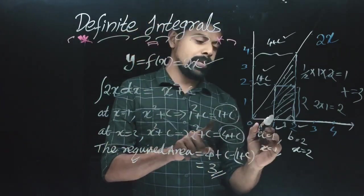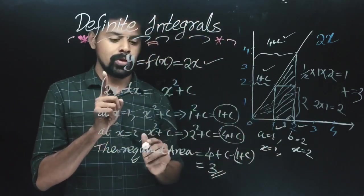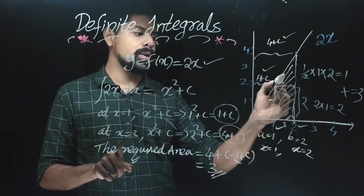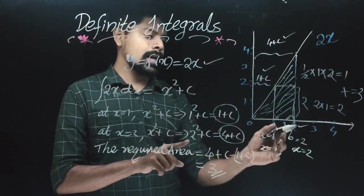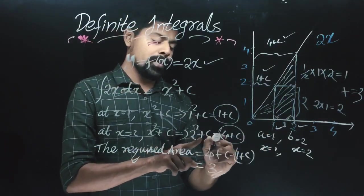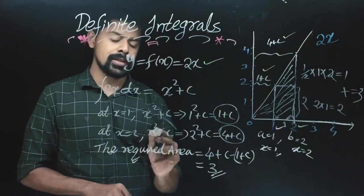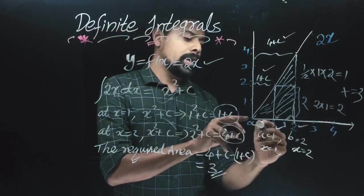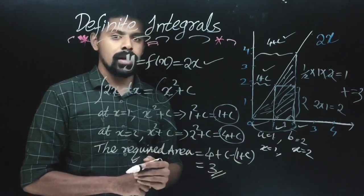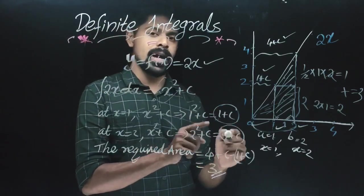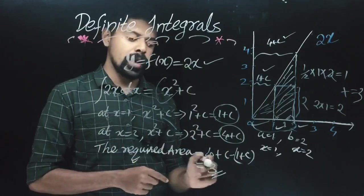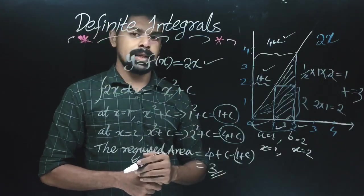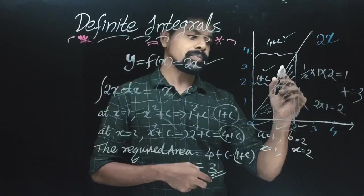At x = 1, we have this area. Now x = 2 is the upper boundary. The boundary is 2. Adding x = 2 gives 4 plus C. We substitute 4 plus C. For this area, 4 minus 1 is 3. We don't need to use C in a definite integral — C cancels. Now we have 3.